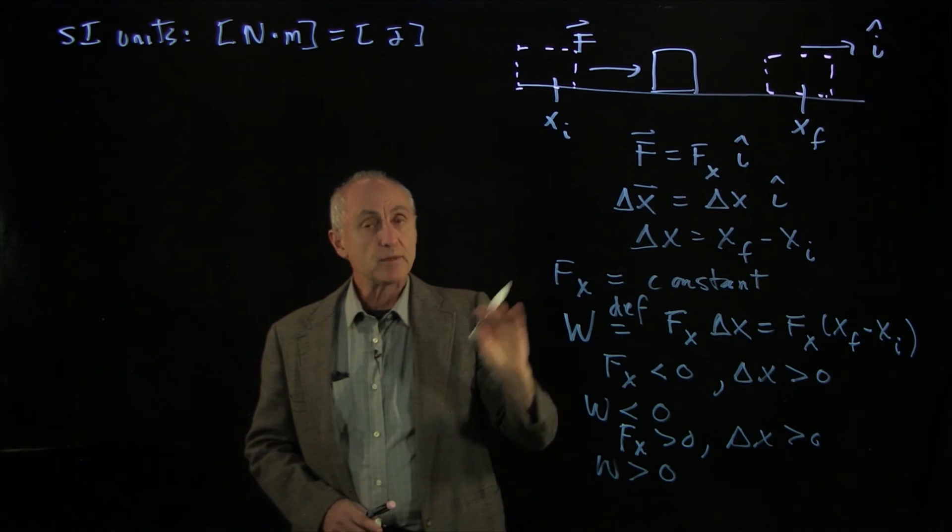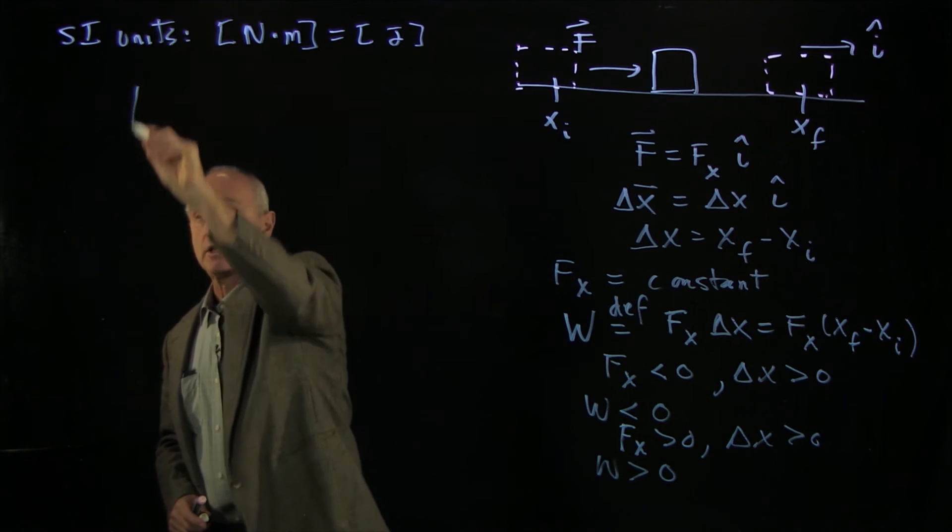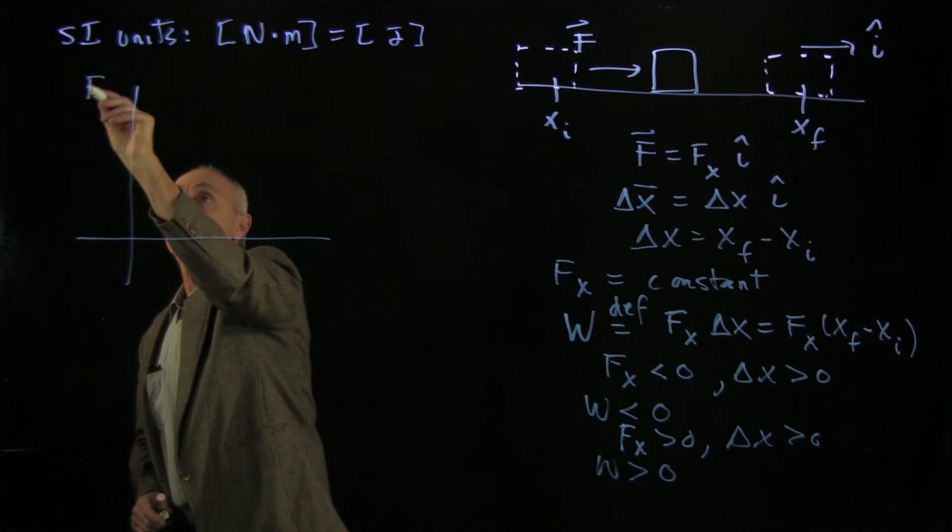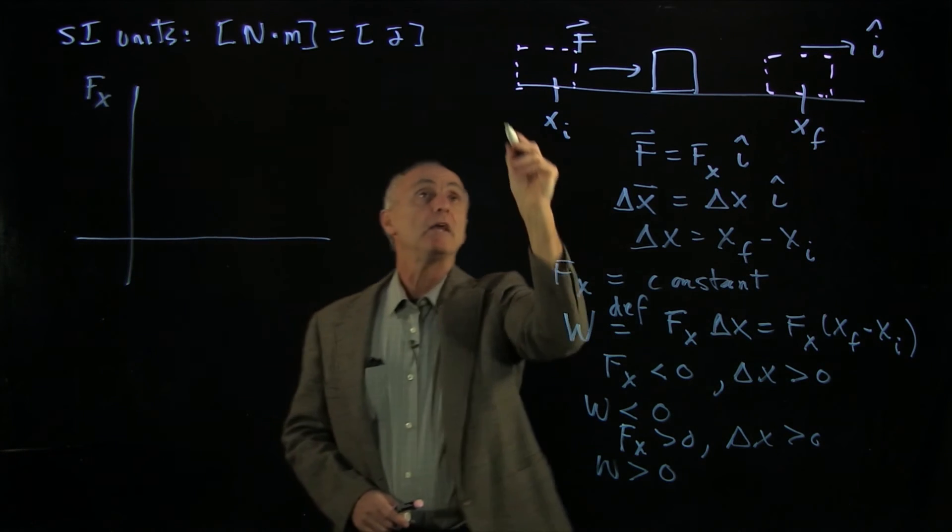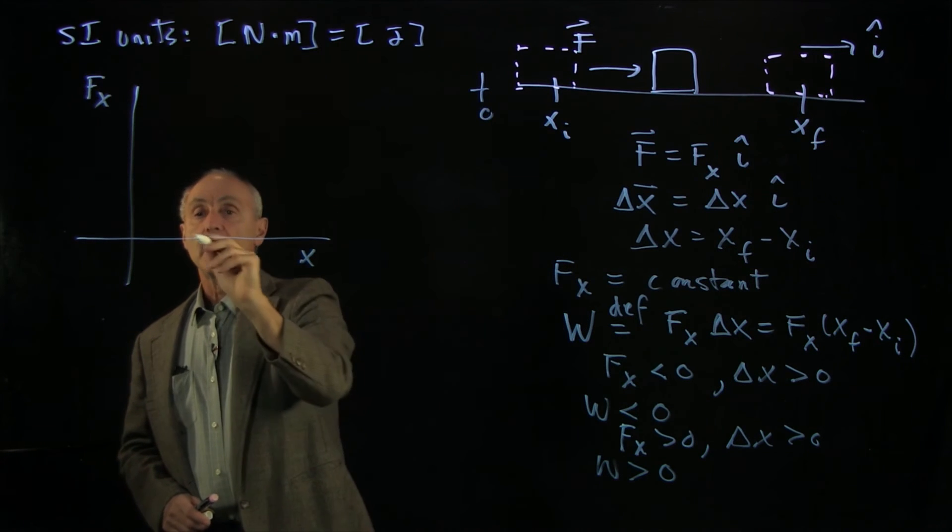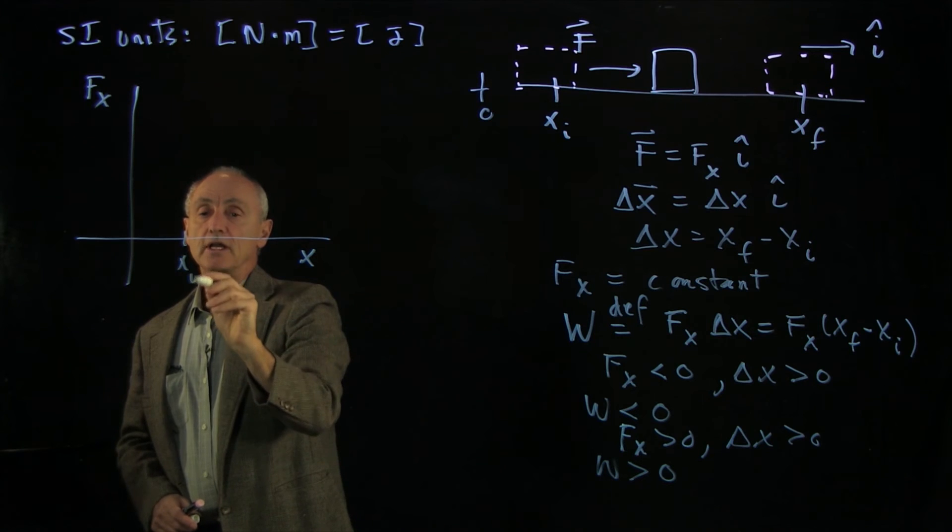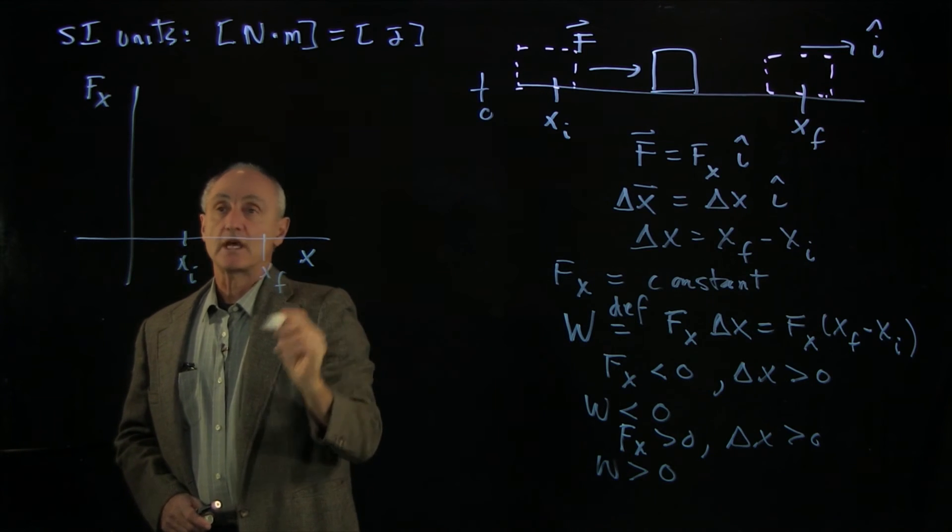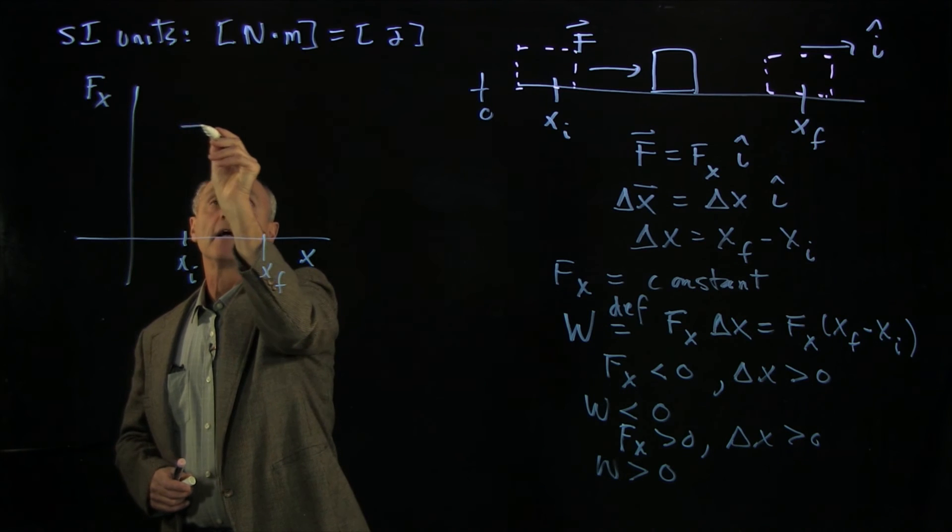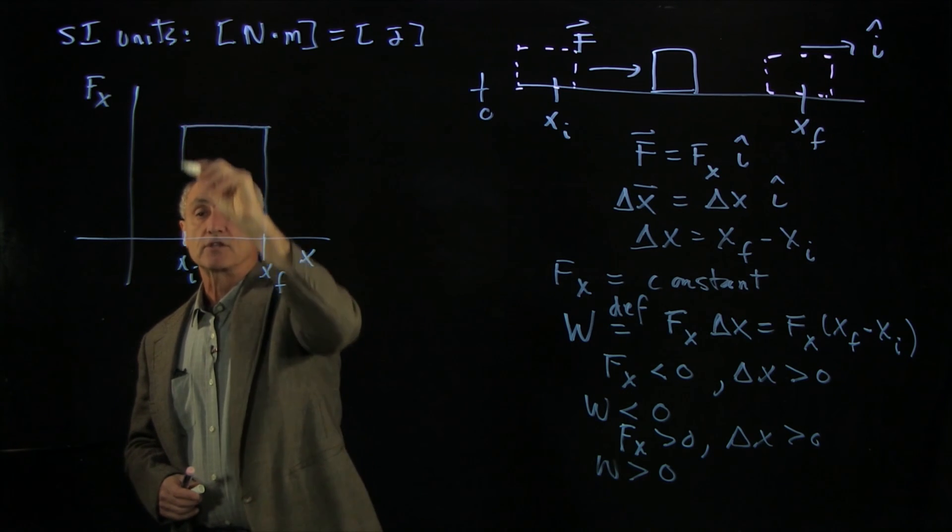Now graphically we can make an interpretation of this. Let's draw a graph of force, the x component of the force. And here, if we had some origin, we'll have x. And our object is starting at xi and it's going to x final. And throughout this process we're assuming that the force is constant.